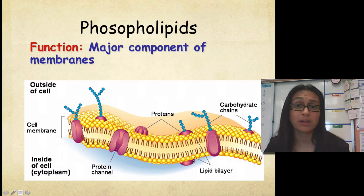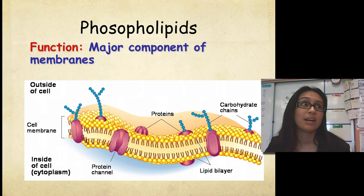This lipid bilayer is what makes cells possible. So this unique structure, this dual personality that these phospholipids have, actually makes cells possible.